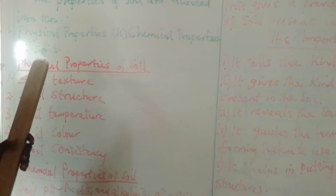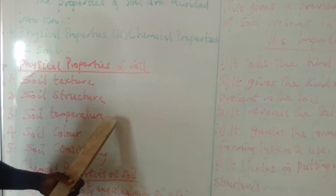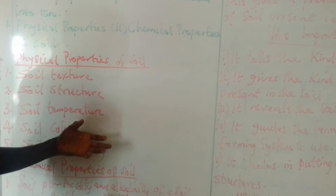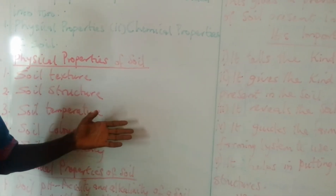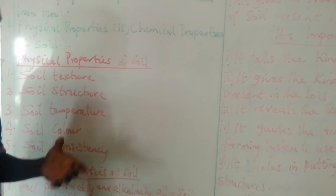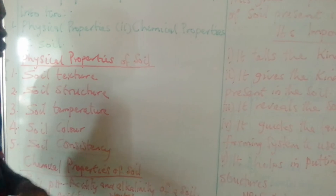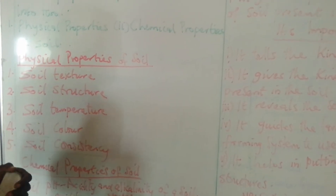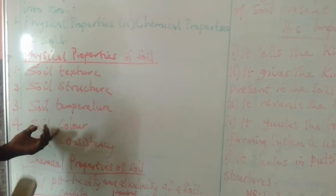Number three, we talk about soil temperature — how hot or cool the soil is. Sandy soil, when it is sunny, is very hot compared to clay soil and loamy soil. That also tells the temperature and the resistance of various crops toward temperature, whether it is high or low.